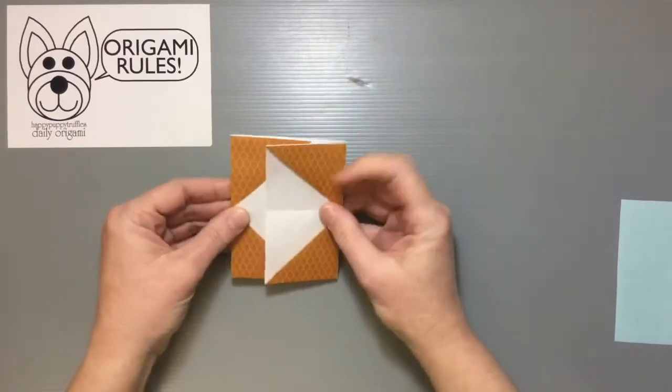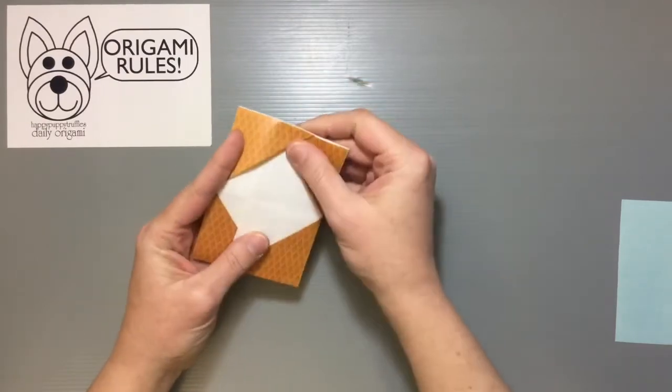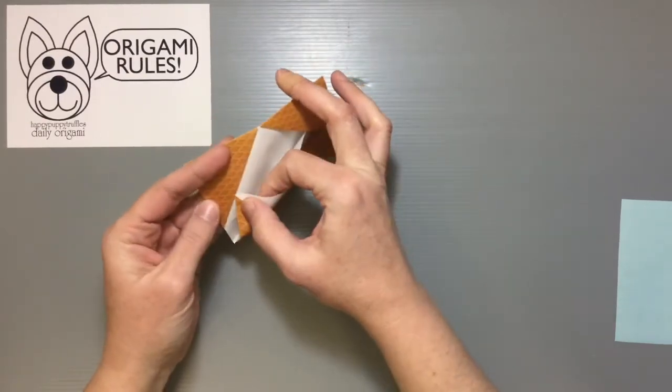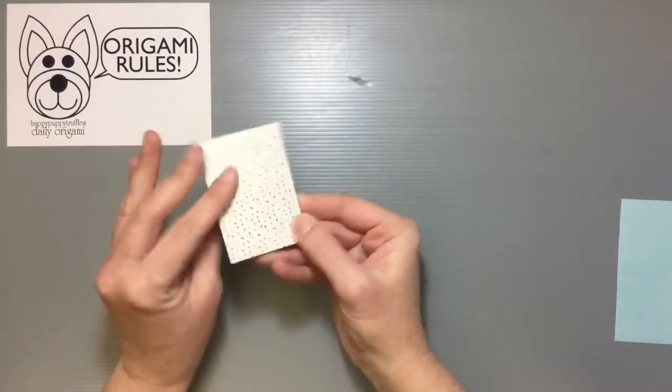So we get something that looks like this. Now we're just going to take one of these tabs and fold it underneath. And the same thing on this side too to give us a nice secured piece. And that's the finished folder.